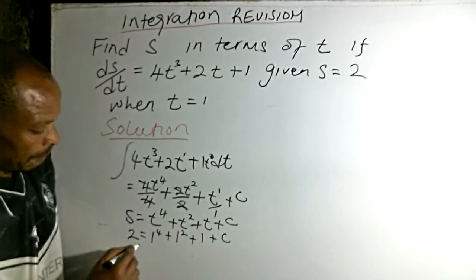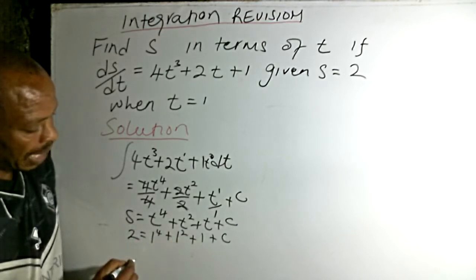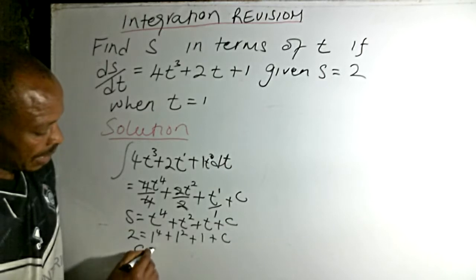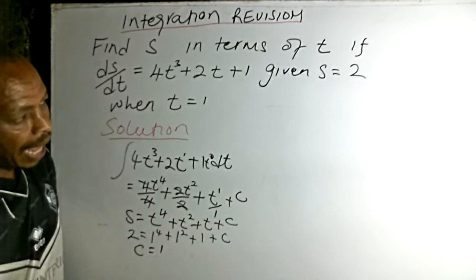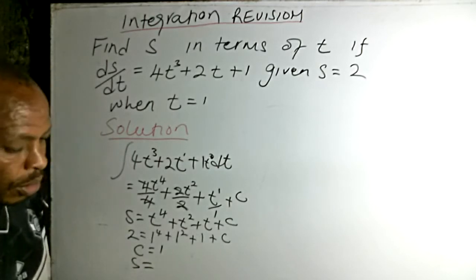This will give us 1 plus 1 plus 1, that is 3. We bring it to this other side it becomes minus, which means c equals -1.